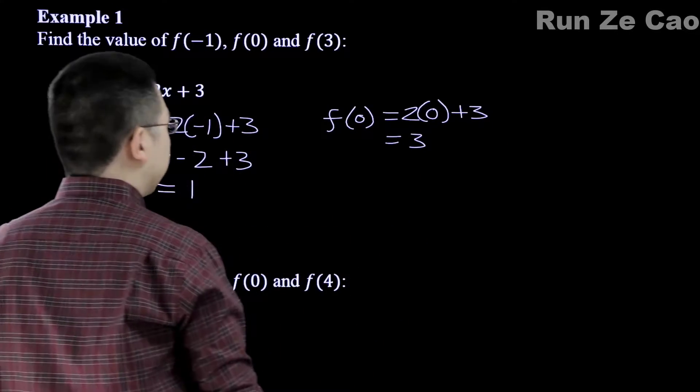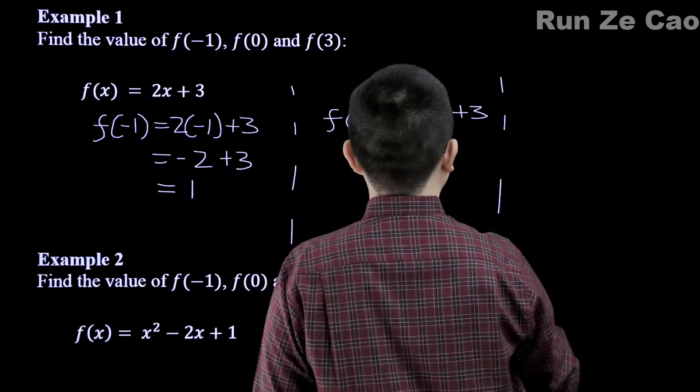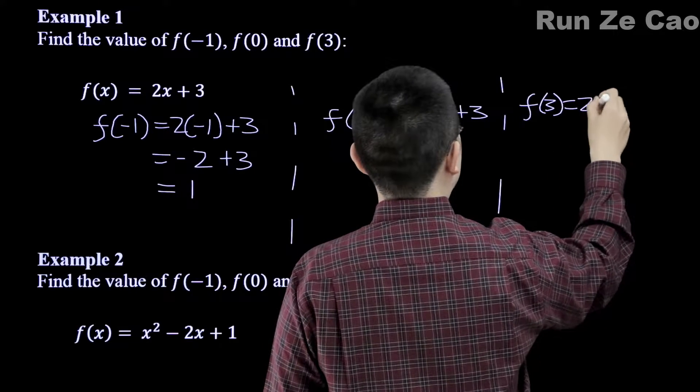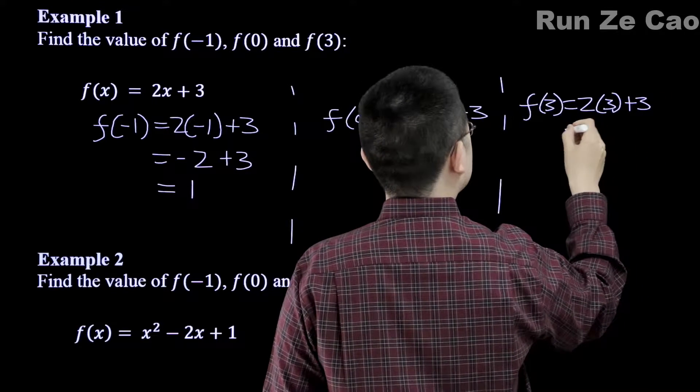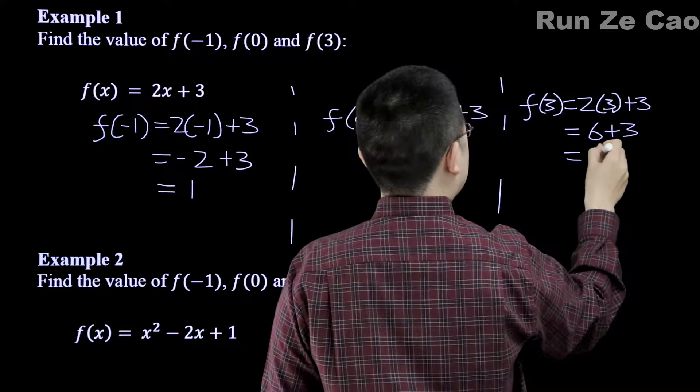Now, f(0) is equal to 2 times 0 plus 3 equals 3.